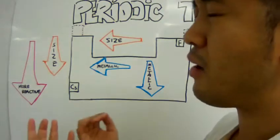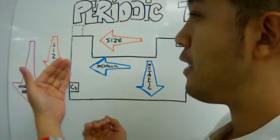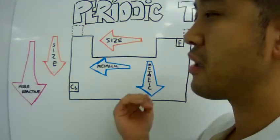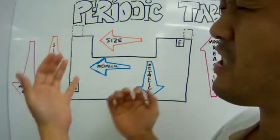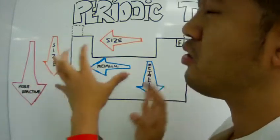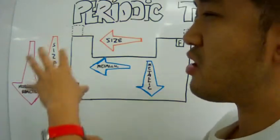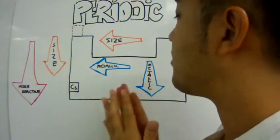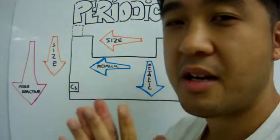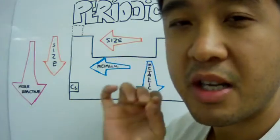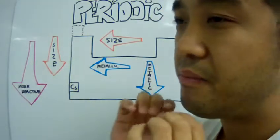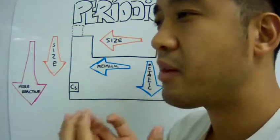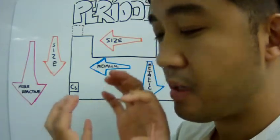Some books will talk about melting or boiling point trends in the periodic table, but in my opinion it's really hard to generalize that — it would be easier to focus on a particular group. So let's talk about atomic size. This is the atomic size, not the ionic size or anything like that, but the atomic size — you're looking at the atomic radius of the elements.